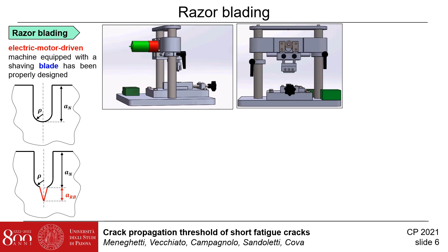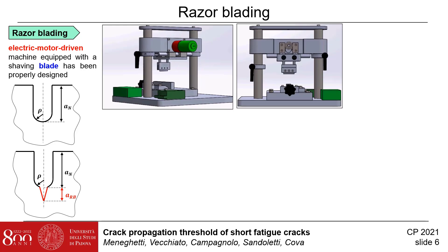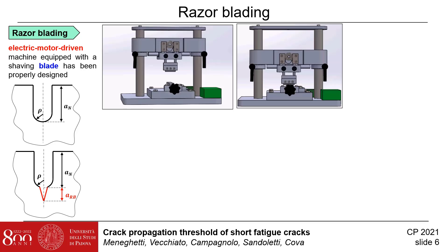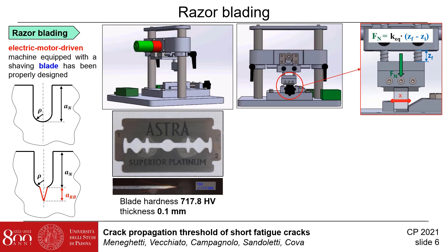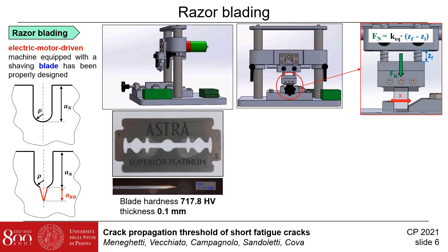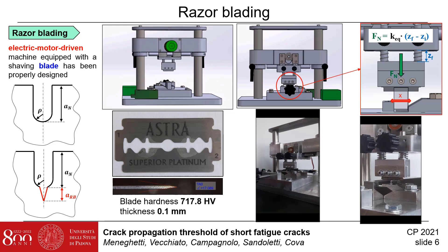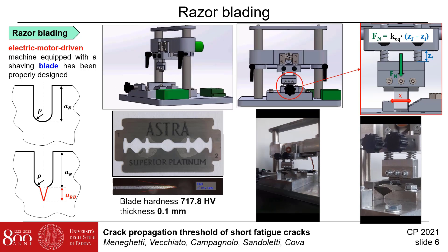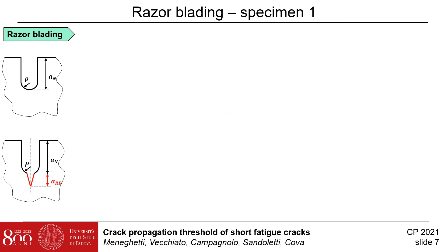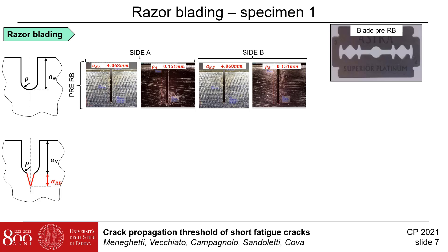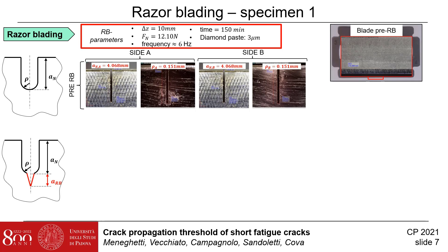To this aim, an electric motor-driven machine has been properly designed with a cam mechanism translating the rotary motion of the electric motor into a translational motion of a slide, equipped with a shaving blade, which is pressed against the specimen notch tip with a force defined by pre-compressed springs. The force value can be defined by properly setting the spring pre-compression. The video shows the razor blading machine working on a SENB specimen. The razor blading technique has been applied by setting a pre-compression load of 12 N. A diamond paste with a size of 3 microns has been added as lubricant. The translational speed has been set to 6 razor blade strokes per second, applied for 150 miles.